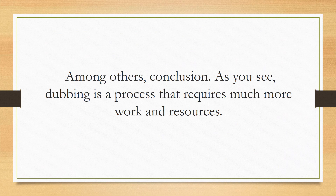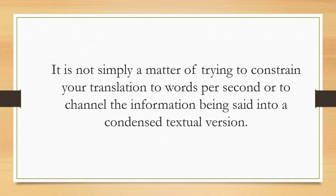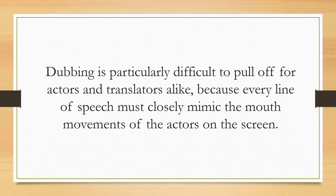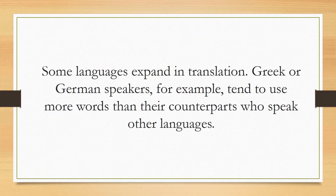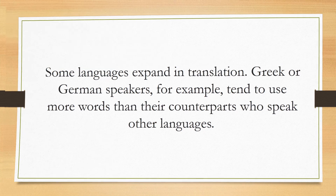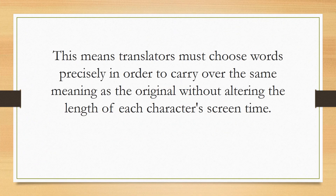Conclusion: As you can see, dubbing is a process that requires much more work and resources. It is not simply a matter of trying to constrain your translation to words per second or condensing information into a brief textual version. Dubbing is particularly difficult for actors and translators alike because every line of speech must closely mimic the mouth movements of the actors on screen. Some languages expand in translation — Greek or German speakers, for example, tend to use more words than their counterparts in other languages. This means translators must choose words precisely to carry over the same meaning without altering the length of each character's screen time.